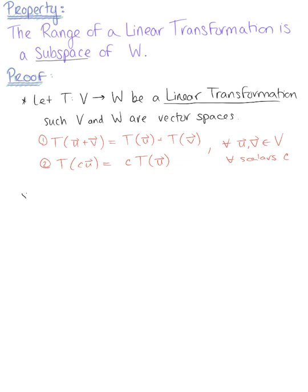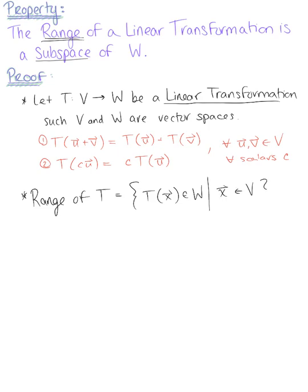Since we want to show that the range of a linear transformation is a subspace of W, let's recall the definition of range. The range of T is defined as the set of all images of vector X under the action of T in vector space W, such that vector X is in V. This will be important as we show that the three properties of a subspace hold true.